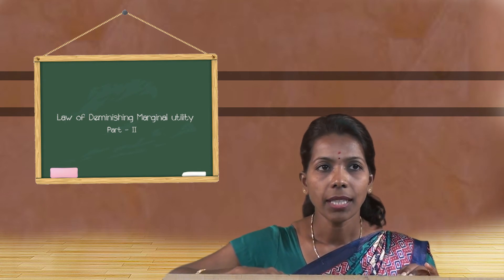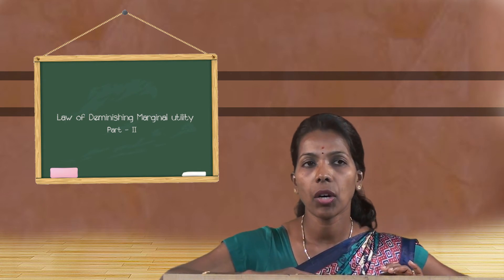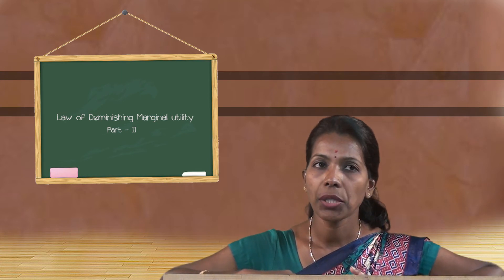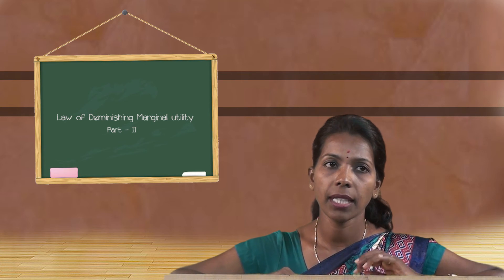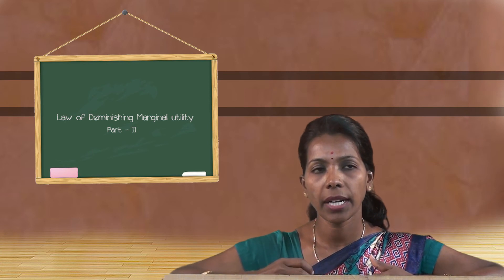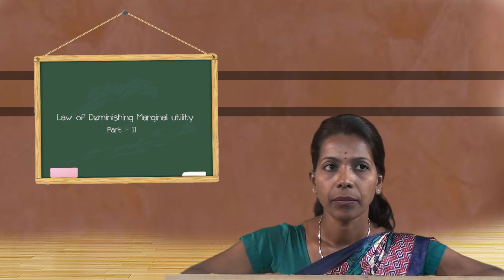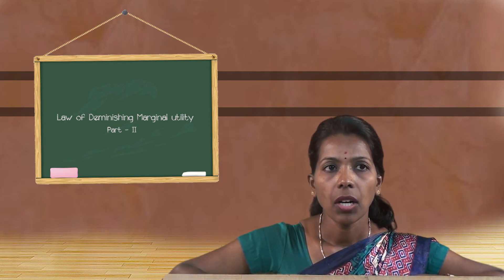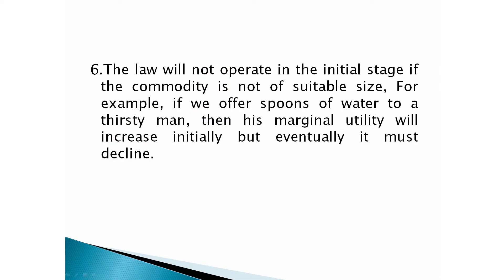The law also assumes that other things remain constant — meaning if taste, fashion, income, and habits of the consumer remain the same, the law holds good. But if there is any change in any one of those factors, the law would fail. Additionally, the law will not operate in the initial stage if the commodity is not in a suitable size. For example, if you offer spoons of water to a thirsty man, his marginal utility will increase initially, but eventually it must decline.